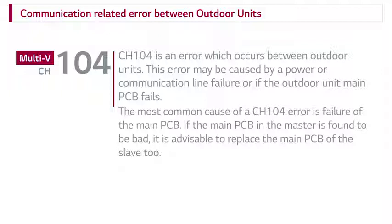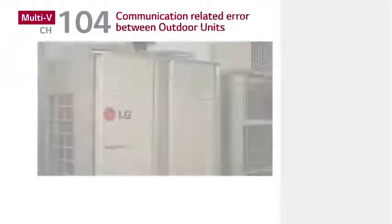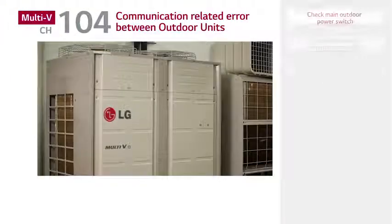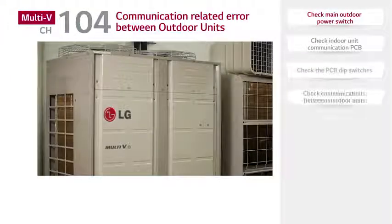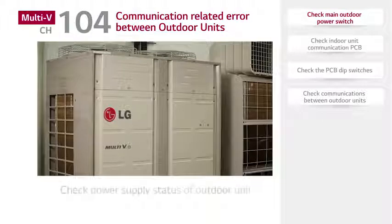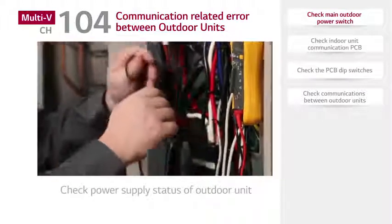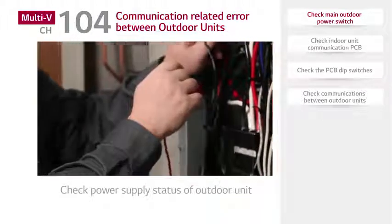If the main PCB in the master is found to be bad, it is advisable to replace the main PCB of the slave unit first. Check for proper power supply to the outdoor unit.